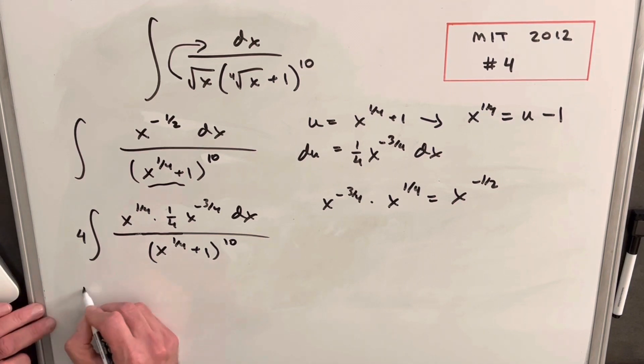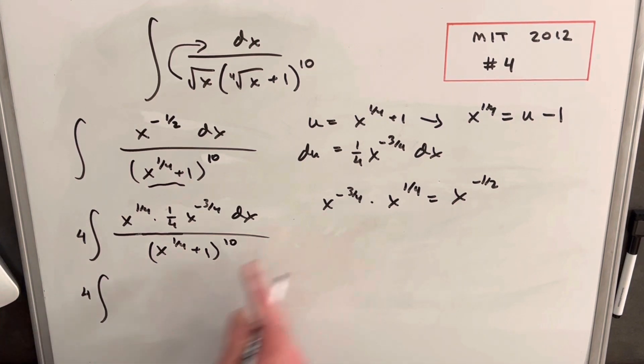So let's make this substitution now. We'll have our four out front. We'll have u minus one. This piece here is going to be du. Okay, and then in our denominator, we're just going to have u to the tenth.